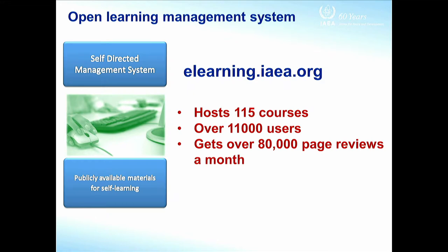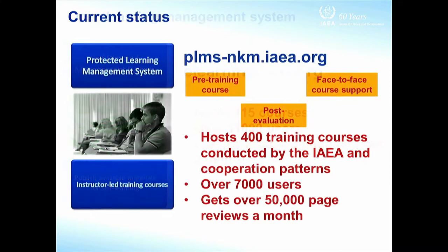The open learning management system is accessible at the URL eLearning.iaea.org, where you can see all courses — 115 of which you can self-enroll in. These courses are organized in different categories, which I will show you during the live demo. On average, we are getting 80,000 page views. The protected learning management system has its own URL, is used to provide pre-training and support face-to-face training, and has around 400 training courses with an average of 50,000 page views.